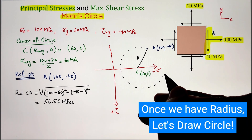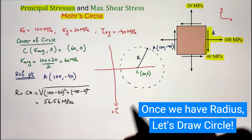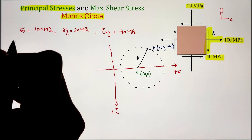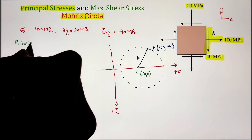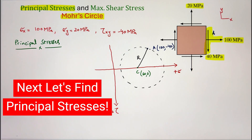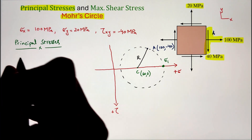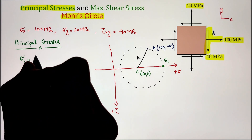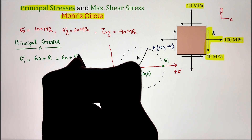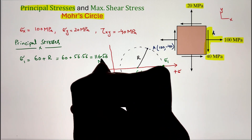Once we have drawn our circle, let's go ahead and identify our principal stresses utilizing the information from our circle. By definition, principal stresses are the maximum or minimum normal stresses. The maximum point on the horizontal axis is identified as sigma 1. Its value is calculated from the origin: the distance from origin to point C gives us 60, and adding the radius moves it to sigma 1. So our sigma 1 value is 116.56 megapascal.